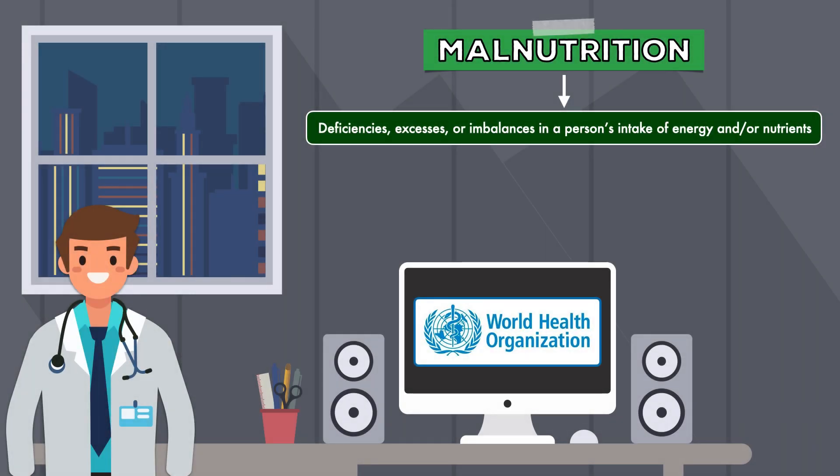The World Health Organization defines malnutrition as deficiencies, excesses, or imbalances in a person's intake of energy and/or nutrients. This includes overnutrition, such as overweight and obesity, and undernutrition, which involves an overall lack of essential nutrients that can occur at any body size.